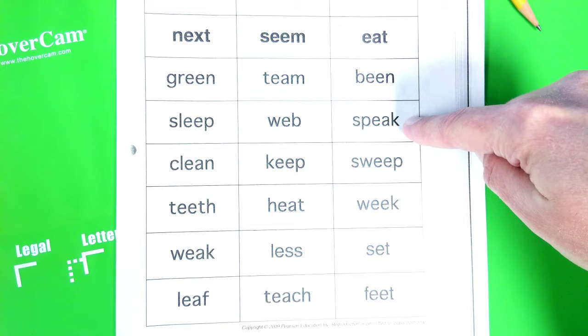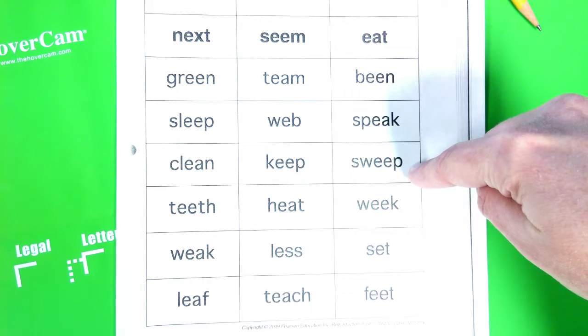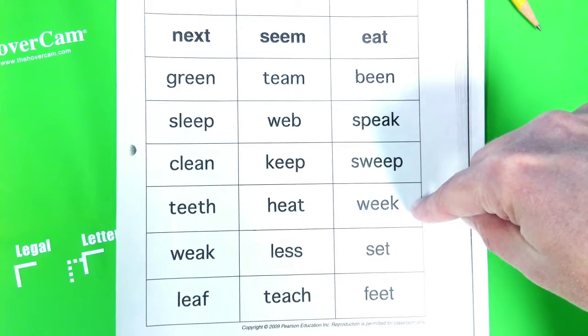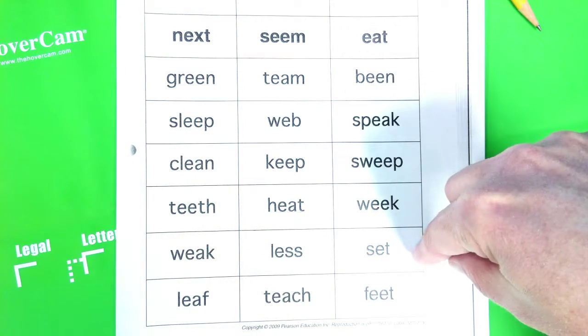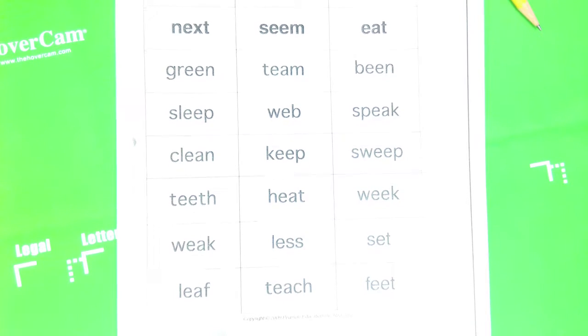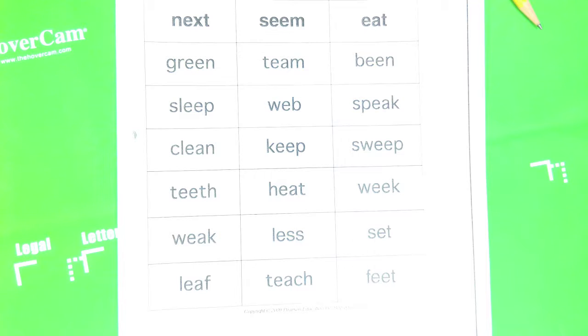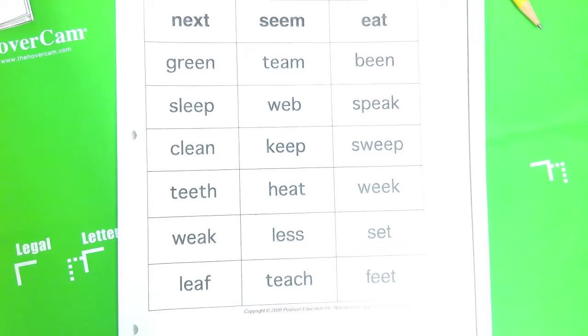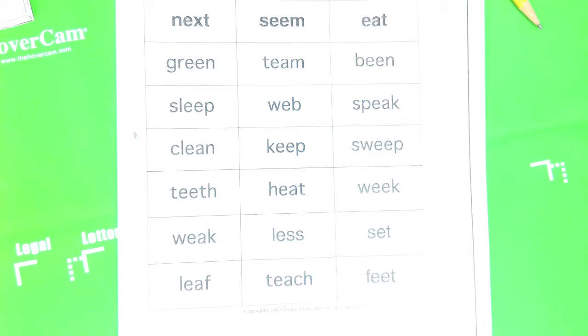Been, speak, sweep, weak, set, feet. Now remember, if you do not know what any of these words mean, you need to go ask an adult or an older brother or sister, someone that can tell you.